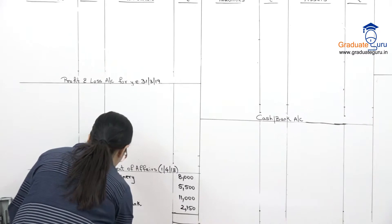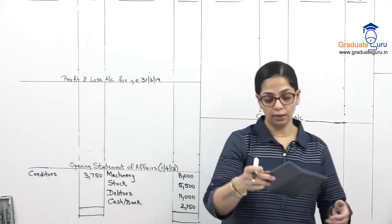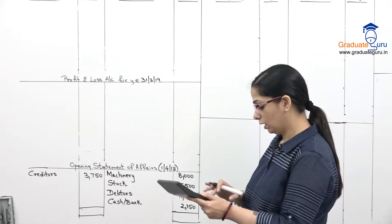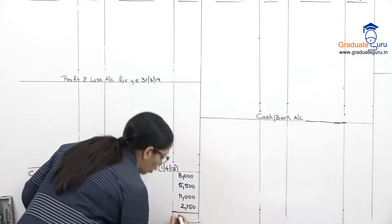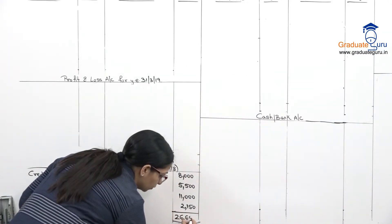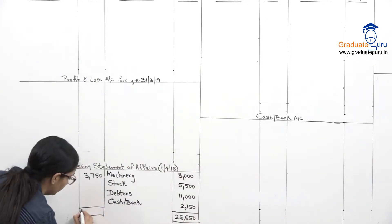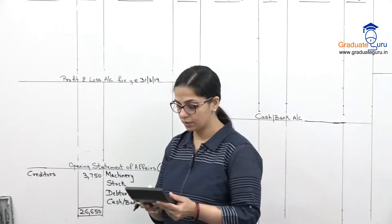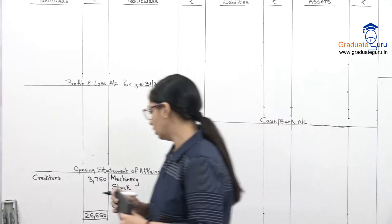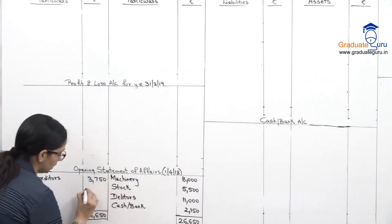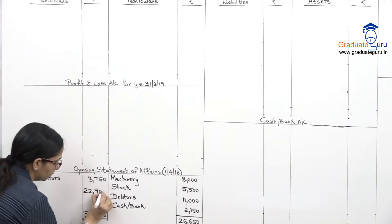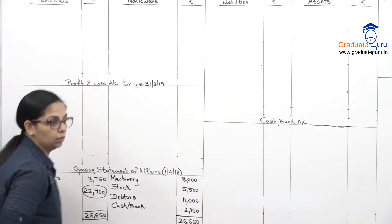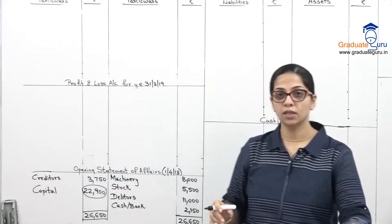Asset side total: 8,000 + 5,500 + 11,000 + 2,150 = 26,650. Subtract liability of 3,750. Opening capital = 22,900.